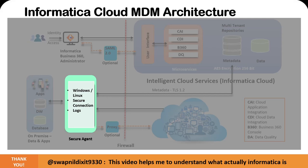In that architecture, on-premise components interact with Informatica's intelligent cloud services. As a designer, developer, or administrator you might use Informatica Business 360 or administrator services through the identity access service to connect to the intelligent cloud services. However, if you have on-premise applications, data warehouses, or databases and you want to get data from the intelligent cloud — business data or metadata — you have to go through the secure agent.